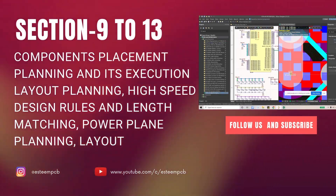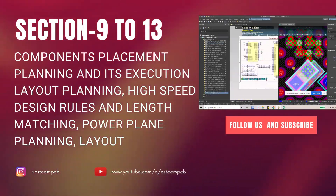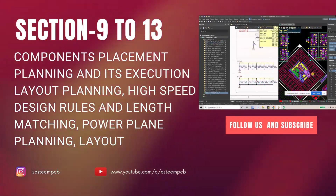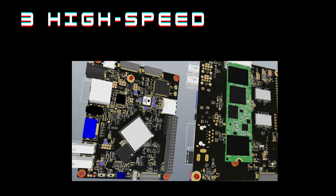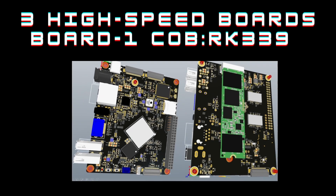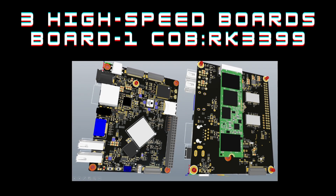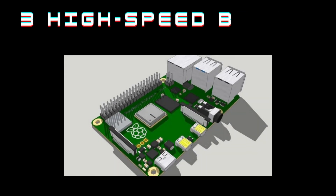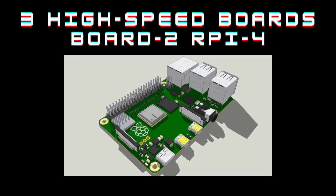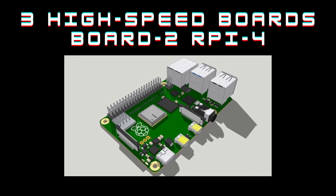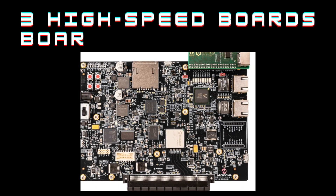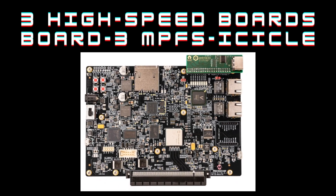Then we will move to component placement and its layout. You can complete this course within 2 months, and after that I am going to publish the Raspberry Pi section. In total, this will be about 6 months of continuous learning and continuous practicing on different boards.